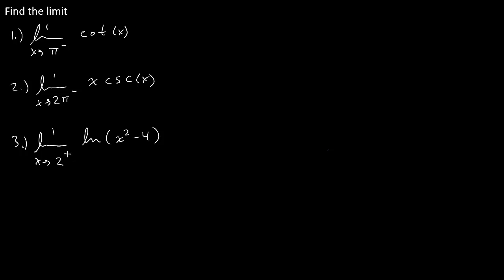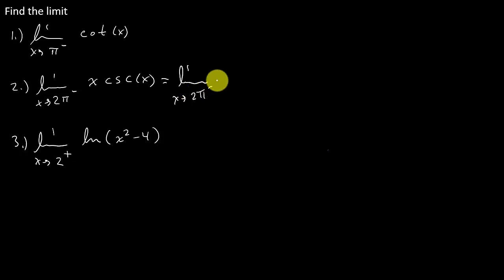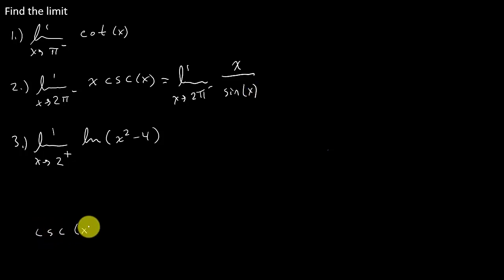Alright, so this is equal to the limit as x goes to 2π from the left of x times cosecant x. We would have to think about what the graph of cosecant looks like, but I think it would be easier if we rewrote this problem as x over sine x. Because cosecant x is equal to 1 over sine x.